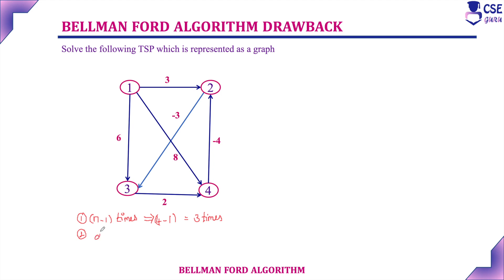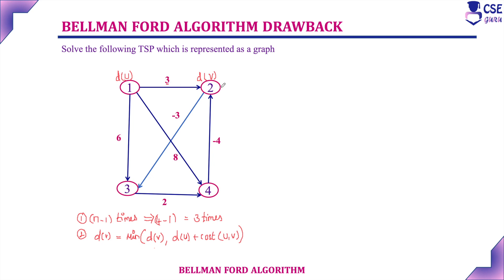Every time when we are relaxing the edges, we have to implement d of v — that is, every time when we are finding the new route, consider the minimum of d of v. This d of v is nothing but the already-known destination cost, or d of u plus cost of u comma v. So, d of v equals minimum of d of v and d of u plus cost of u comma v. Whichever is minimum, that cost we will consider.